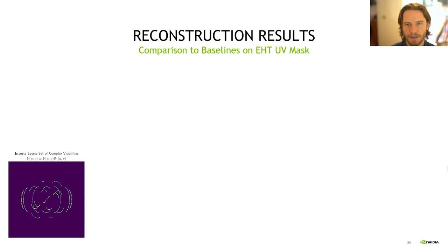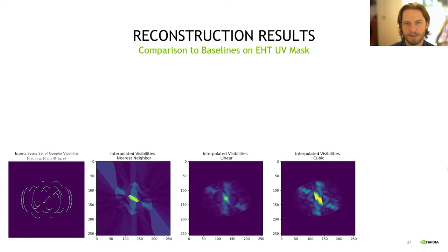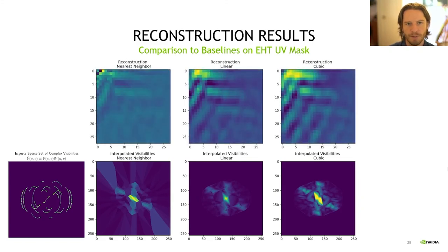Next, we compare against some baselines, again using the EHT UV data. One common sense baseline might be to perform a straightforward interpolation of the visibility data. Here, we show nearest neighbor interpolation linear and cubic. We can see that these methods fail in such sparse visibility regimes.